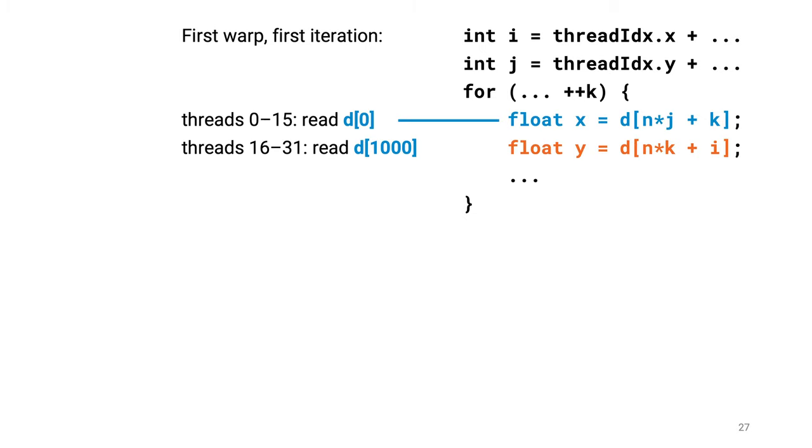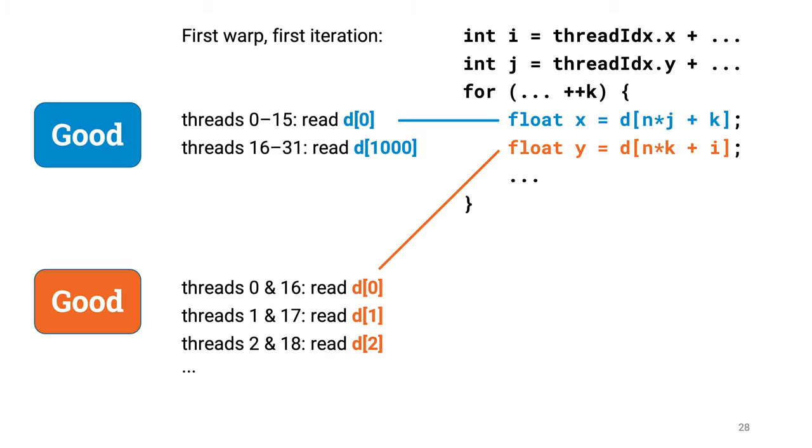The first warp, the first iteration. What do we read here? We are just reading two distinct locations. They are far from each other, but still clearly something that fits in two cache lines. Good. But what about the other memory read? Are we now in trouble there, as we exchange the roles of i and j? No, we are doing well also here. We read 16 different memory locations, but they are nicely packed next to each other, so a small number of cache lines is enough to cover them. So now both memory reads are good.